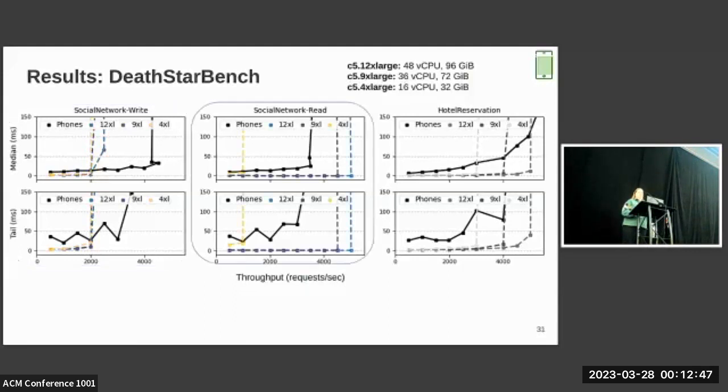For the social network application, this time with a read-heavy workload generator, the phone cluster performs significantly worse. It's somewhere between a 4XL and a 9XL machine. And then for hotel reservation, which has a mixed workload generator with both reads and writes, the phone-based cluster is somewhere around the performance of a 9XL. So from this, we said the phone-based system is something like a C5 9X large instance.